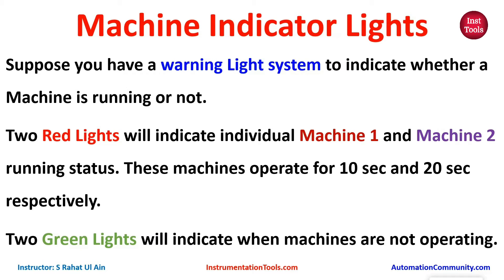When Machine 1 is running for 10 seconds, the corresponding red light will be on for 10 seconds also. And then when Machine 1 will stop, the corresponding green light will be on for 20 seconds. After that, Machine 2 will operate for 20 seconds. When Machine 2 is operating, the second red light will turn on. And then when Machine 2 will stop, the second green light will be on.